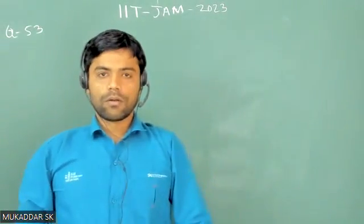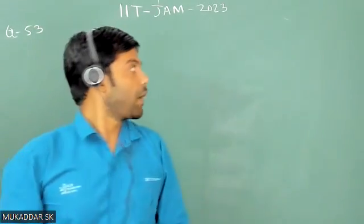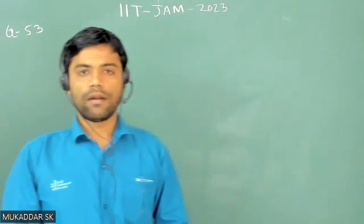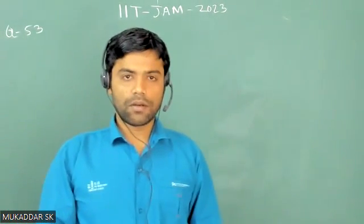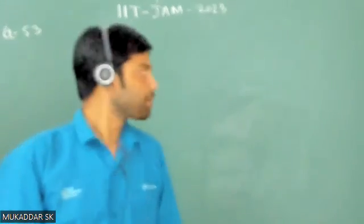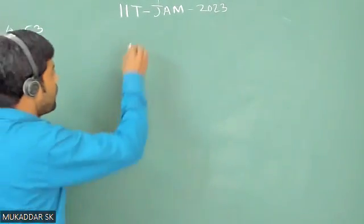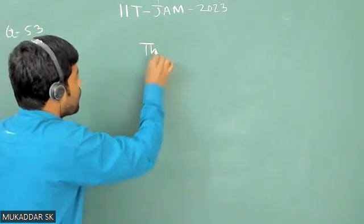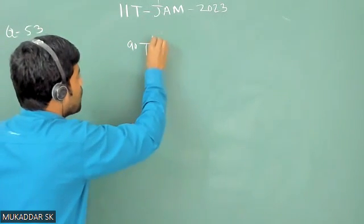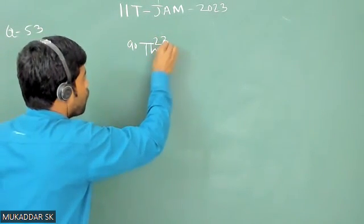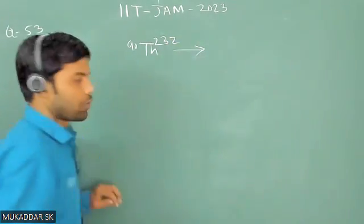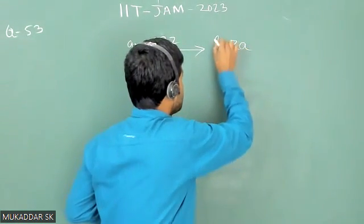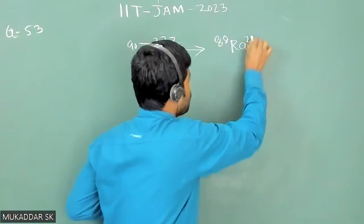Hello students, today we are going to solve a question from IIT Jam 2023, from modern physics and especially from radioactivity. In this question, you have an alpha decay process where parent nuclei thorium, atomic number 90 mass number 232, is decaying to daughter nuclei radium, atomic number 88 mass number 228.